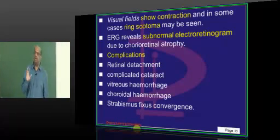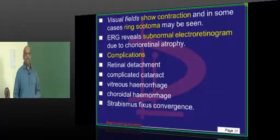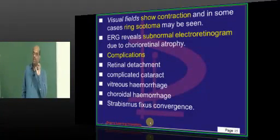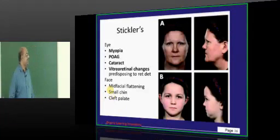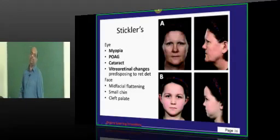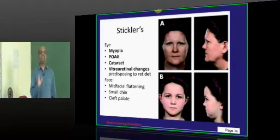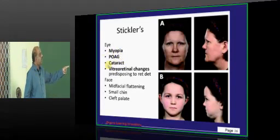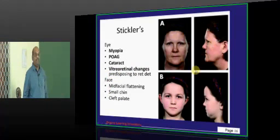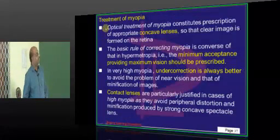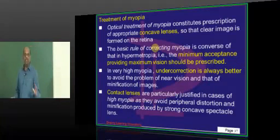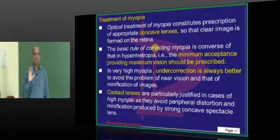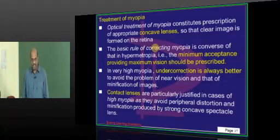Complications of pathological myopia: retinal detachment, complicated cataract, vitreous hemorrhage, choroidal hemorrhage, and convergent squint. Are there syndromes associated with pathological myopia? Stickler syndrome — it includes myopia, primary open-angle glaucoma, cataract, vitreoretinal changes, mid-facial flattening, and a small chin. The buzzwords not to forget: lacquer cracks, Foster Fuchs spots, posterior staphyloma, and vitreous degeneration.